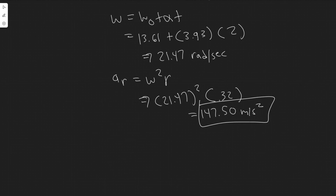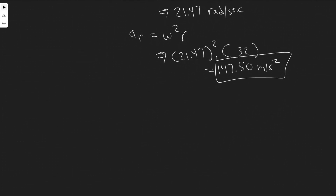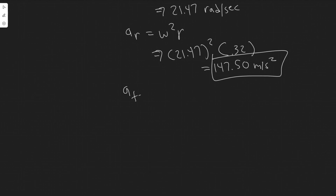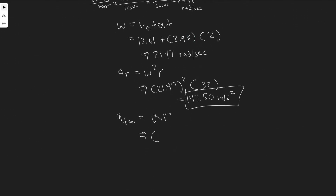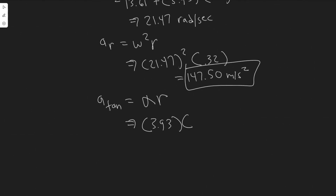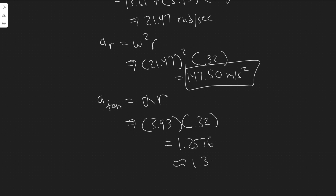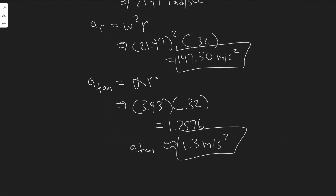For the tangential acceleration, a-tan, we use a different formula: a-tan equals alpha times the radius. Alpha is 3.93 radians per second squared, and the radius is 0.32 meters. So 3.93 times 0.32 gives 1.2576, which we round to 1.3 meters per second squared. That's the tangential acceleration.